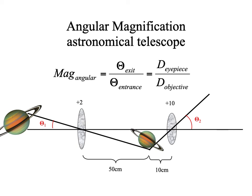Before moving on to different telescopes, note that the image of Saturn formed in the middle of the tube — that real image — is inverted, as shown by the central ray diagram.